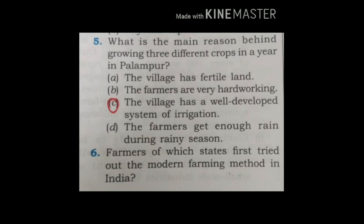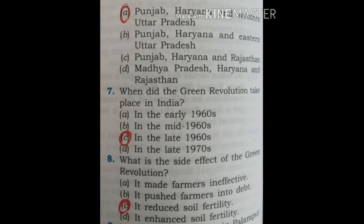Question 6: Farmers of which states first tried out the modern farming method in India? The options are: Punjab, Haryana and Western Uttar Pradesh; Punjab, Haryana and Eastern Uttar Pradesh; Punjab, Haryana and Rajasthan; Madhya Pradesh, Haryana and Rajasthan. The correct option is A — Punjab, Haryana and Western Uttar Pradesh.